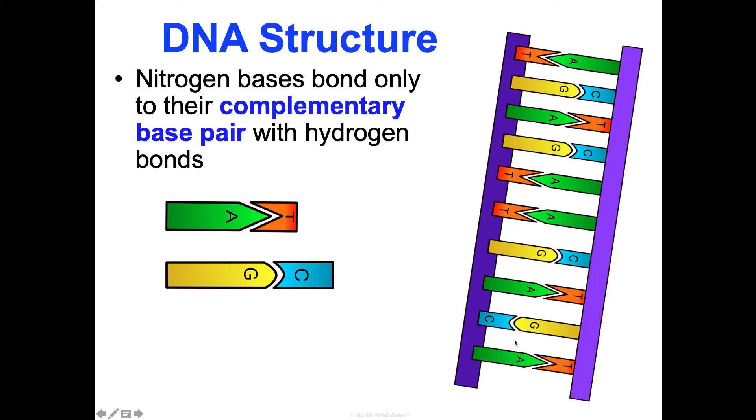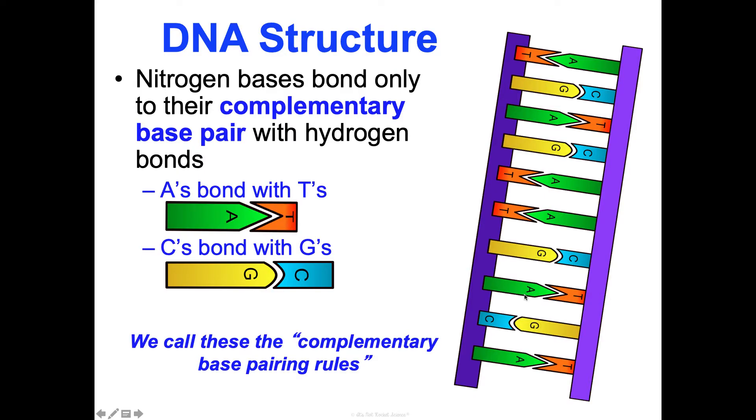When we're looking at those middle rungs of the ladder, those nitrogen bases, they pair up with their complementary base pair. These are held together by weak hydrogen bonds. A's always bond with T's in DNA, and C's always bond with G's. That's really important. These are referred to as the complementary base pairing rules. If you're from the south and you like football, we remember these as Auburn Tigers and Carolina Gamecocks, but you may want to think of another way to remember these.